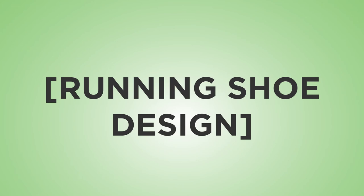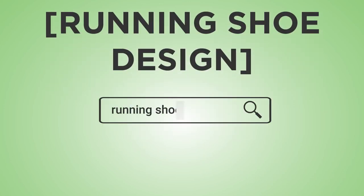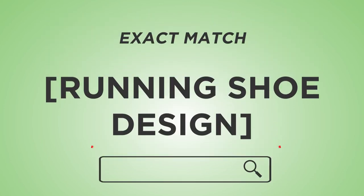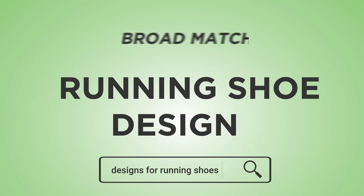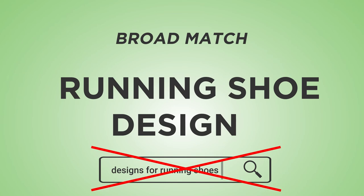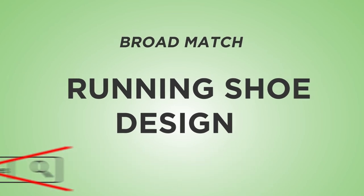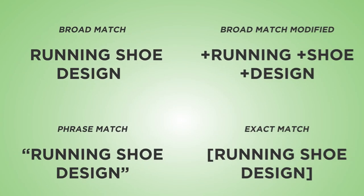Match types are important when you're formatting your negative keyword list too. For example, running shoe design as a negative keyword in exact match would prevent your ad from showing for the verbatim search running shoe design. However, if you also want to block designs for running shoes, you should format that negative keyword into a broad match. By default, Google uses exact match on their negative keywords, so you need to make sure that you're checking your negative keyword list for formatting too.